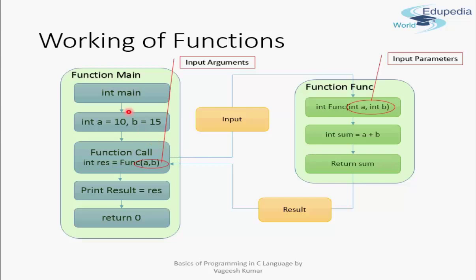In the main function we declare two variables, then we make the function call. The variable int res will store the result of the function call. The function call is written as func(a, b), where a and b are the variables defined in main. The names of these variables don't have to match the input parameter names — they could be anything. You can also pass explicit values like 10 and 15 directly.